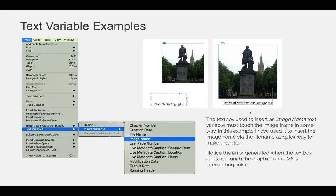But once I drag the text box over the image, you can see that it changes to be the name of the image. You could do a better job naming your images so it doesn't have a run-on sentence for the name of the picture. You can use spaces and then it would look better. That's a very quick way to make sure that all of your pictures have captions.